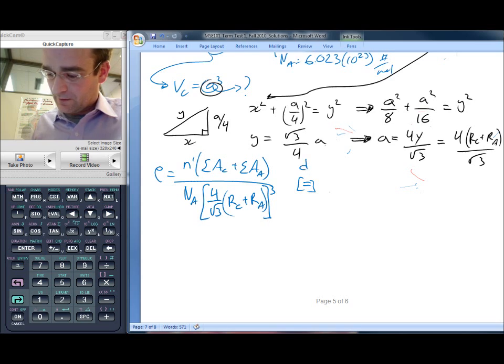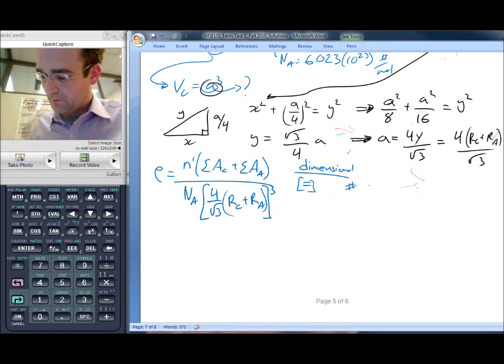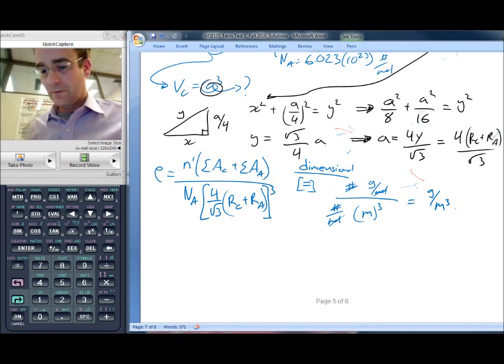And at this point, we can then do a dimensional analysis. Check our units and see that N prime has got units of number. Atomic weight is grams per mole. Avogadro's number is number per mole. And R has units of meters, which is then all cubed. So the units, in fact, cancel out, nicely to leave us with density units of grams per volume cubed. Sorry, per length cubed, which is grams per volume.